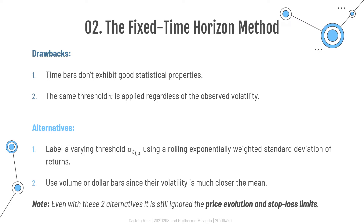Even with these two alternatives, there is a very important issue ignored by the fixed time horizon method, which is the price evolution — more precisely, accounting for stop-loss limits. In fact, it is not realistic to come up with a strategy that profits from positions that would have been stopped out by the exchange. This is why the triple barrier method exists.